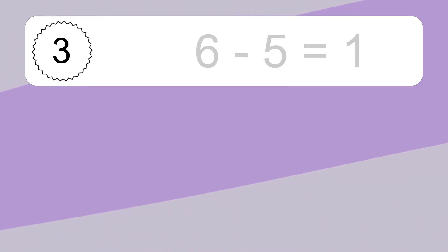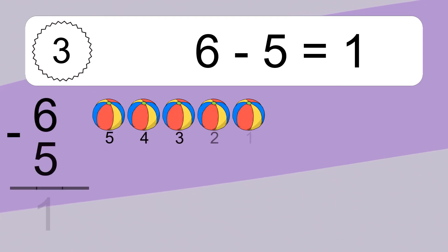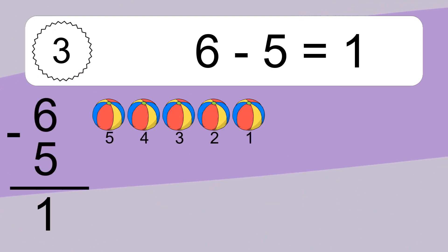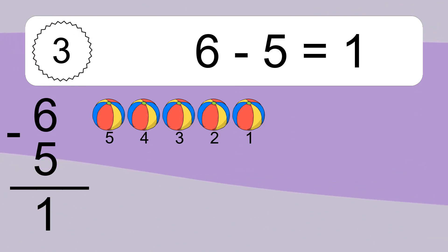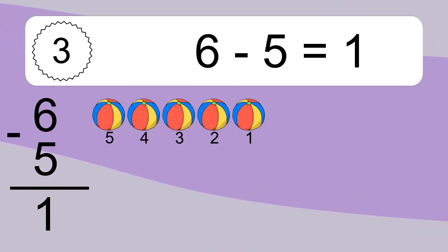6 minus 5 equals what? 6 minus 5 equals 1. Let's count it. 5, 4, 3, 2, 1.